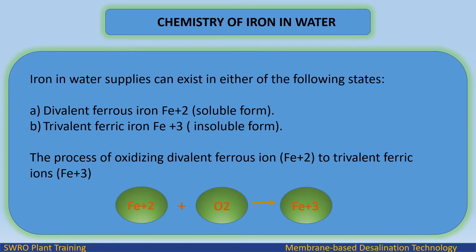Iron in water supplies can exist in either of the following states: divalent ferrous iron, Fe2+, in soluble form, or trivalent ferric iron, Fe3+, in insoluble form. The process involves oxidizing divalent ferrous ions, Fe2+, to trivalent ferric ions, Fe3+, when they react with oxygen.